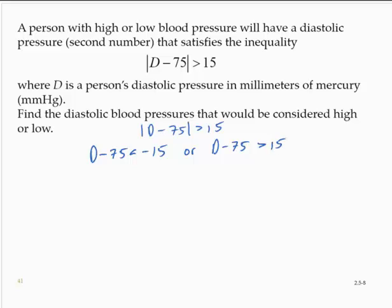Solving each of those inequalities, I'll add 75 to both sides. I'll add 75 to both sides. d is less than 60, or d is greater than 90.